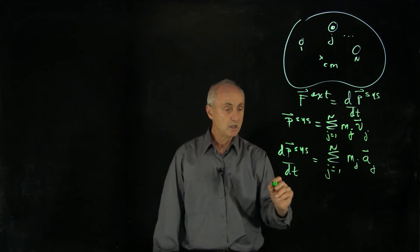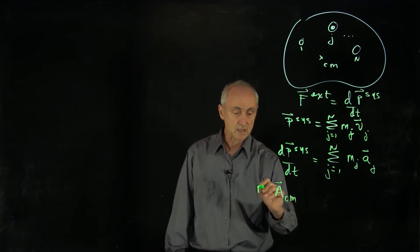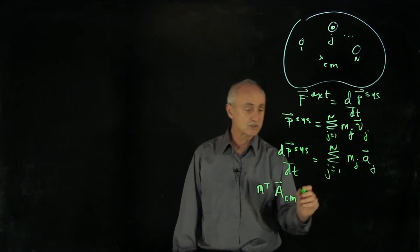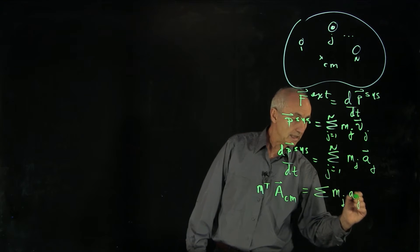Now we saw, when we defined the center of mass, that the acceleration of the center of mass times the total mass of the system was equal to this sum of m_j a_j.